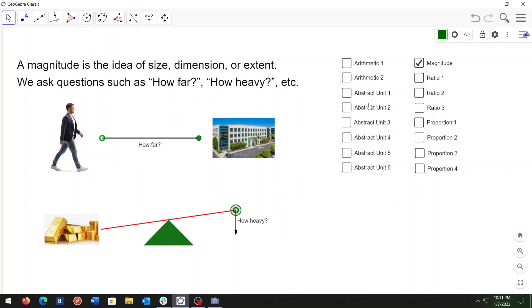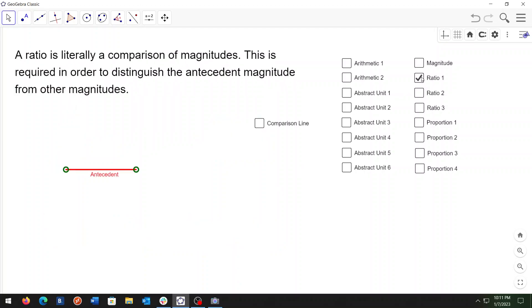Next I'll cover the concept of ratio. A ratio is literally a comparison of magnitudes. This is required in order to distinguish the antecedent magnitude from other magnitudes.